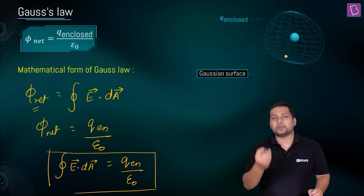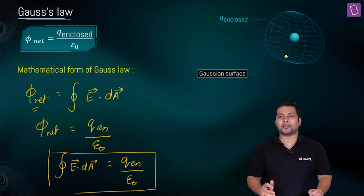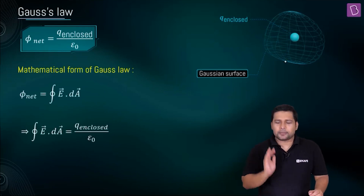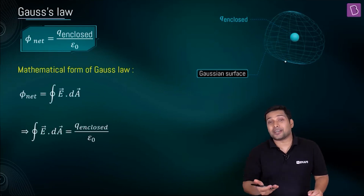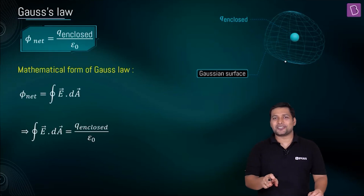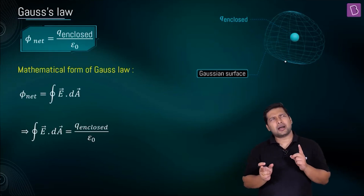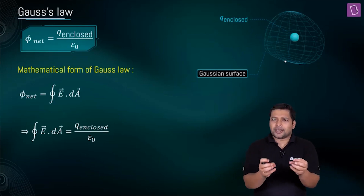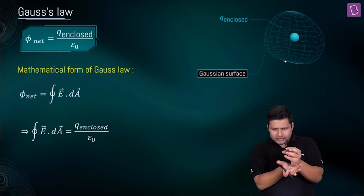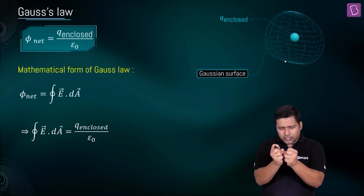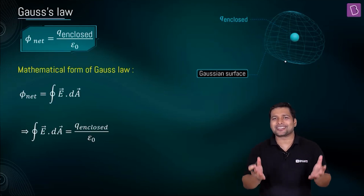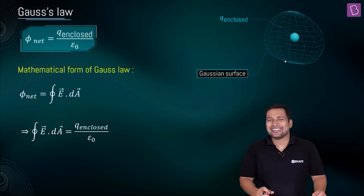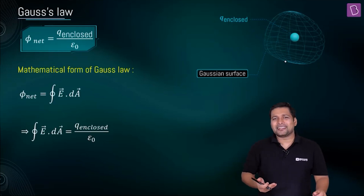Now a simple question: in this Gaussian surface there was a dipole — what is the net flux through this surface? What is the net charge enclosed? A dipole consists of two equal and opposite charges separated by a small distance. If we have a Gaussian surface around it, the net charge enclosed is plus-Q minus-Q, which equals zero. Therefore the flux is zero. Absolutely correct.